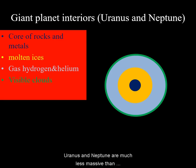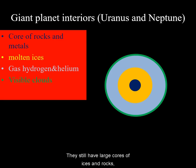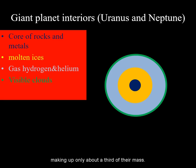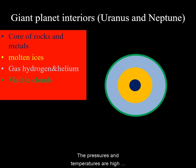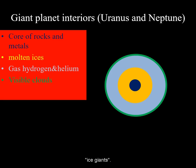Uranus and Neptune are much less massive than Jupiter and Saturn, but still much more massive than Earth. They still have large cores of ices and rocks, but their hydrogen envelopes are far smaller, making up only about a third of their mass. The pressures and temperatures are high enough for the ices to be in molten liquid form, but probably not the hydrogen. These two planets are sometimes referred to as ice giants.